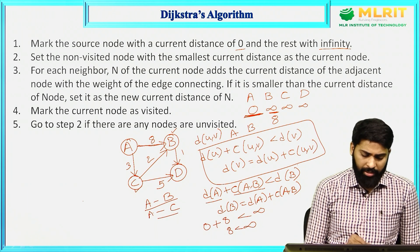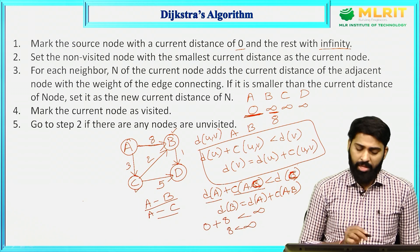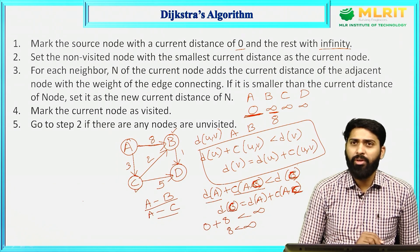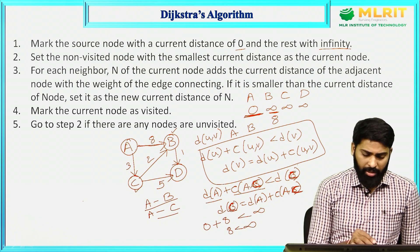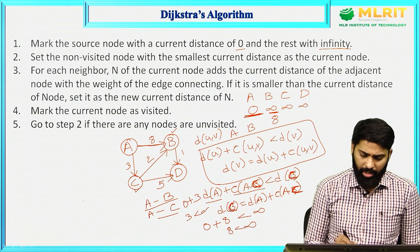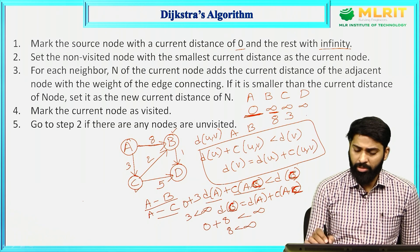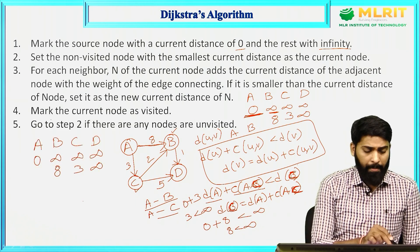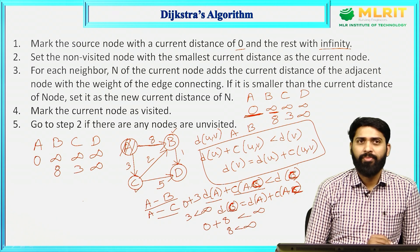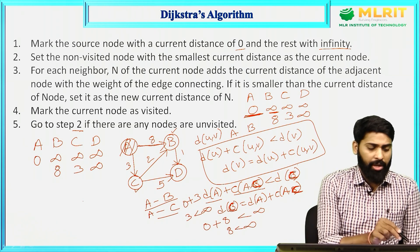Mark A as a visited node. Next, go to step 2. B, C, D are unvisited, so again go to step 2. Set the non-visited node with the smallest current distance. In this, 8 and 3 — the smallest distance is C with value 3.